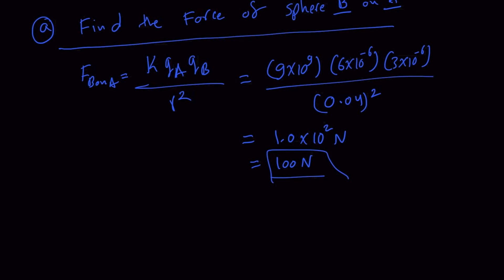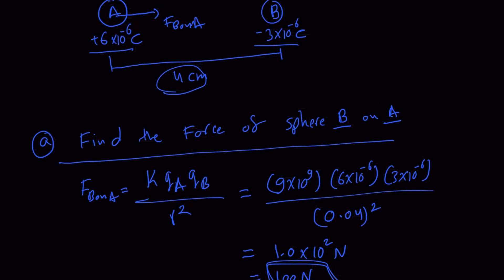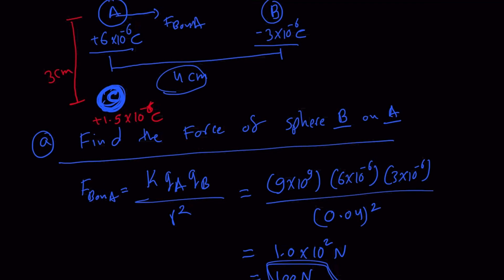This is the basic application of the problem. Now, let's add a third sphere — sphere C — placed right beneath A. Sphere C has a charge of positive 1.5 micro coulombs, which is 1.5 multiplied by 10 to the power of minus 6 coulombs, and it is located 3 centimeters below A.